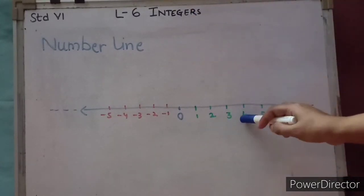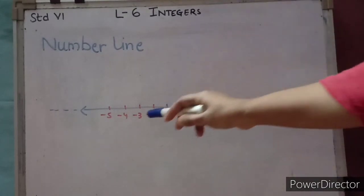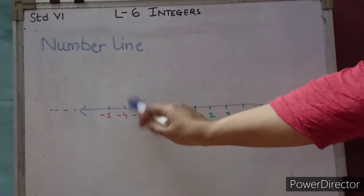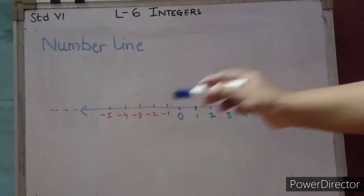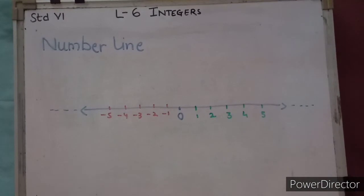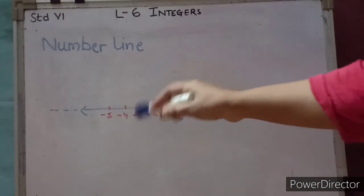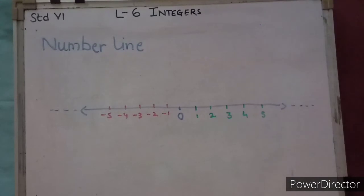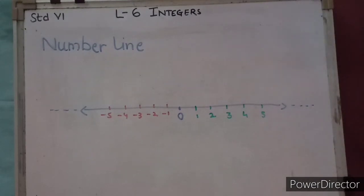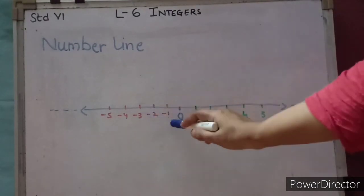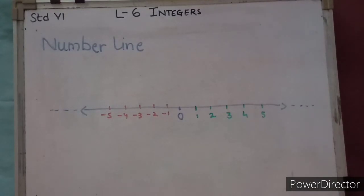For example, 5's left side is 4, and 4 is smaller than 5. For minus 3, its left side is minus 4. So in negative numbers, as we go further left, the value decreases — minus 1 is the greatest negative number. In positive numbers, the value gets bigger as we go right. All negative numbers are less than 0. Now we will solve exercise 6.1 so you understand the concept clearly.